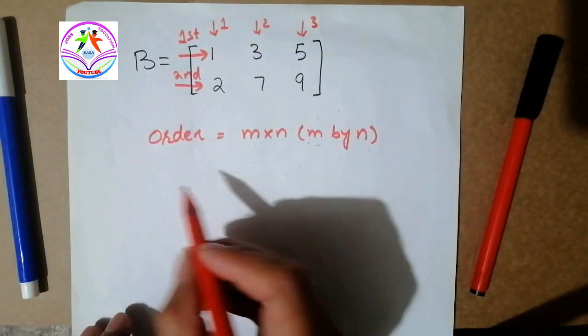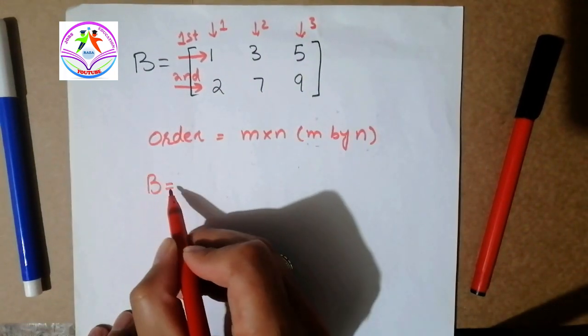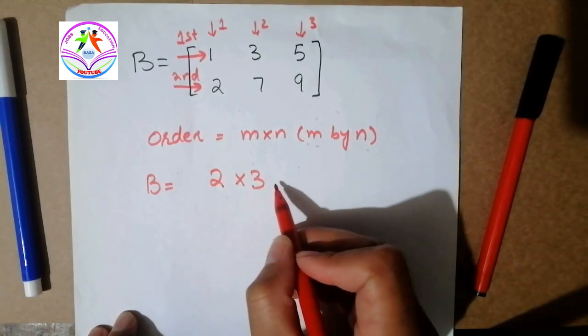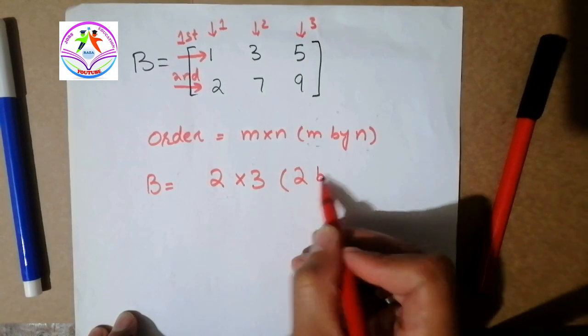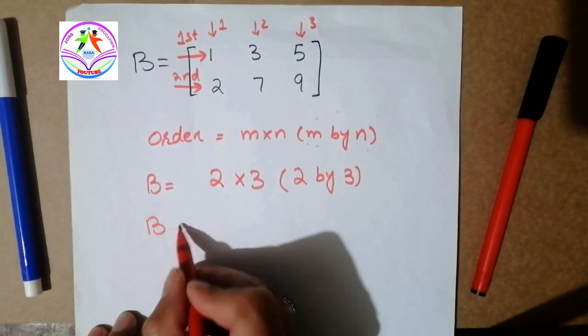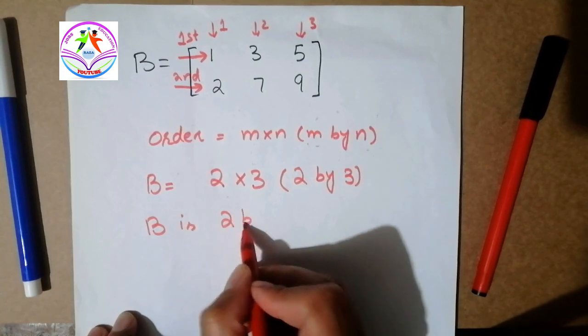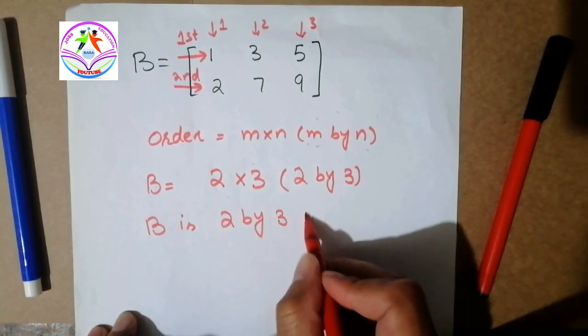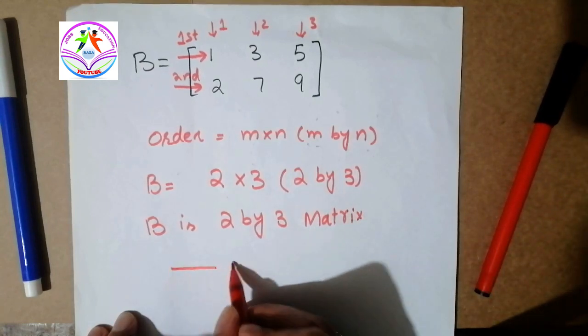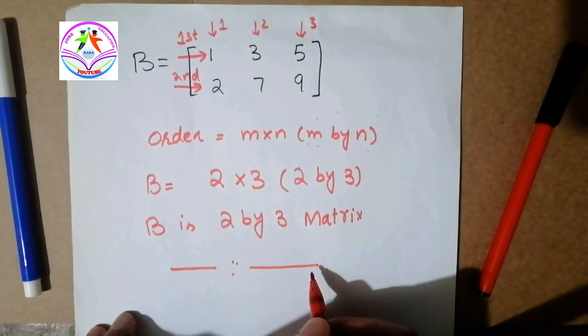So here you can check that first row and second row, first column, second column, and third column. So you can tell me what's the answer, two rows and three columns. Yes, you are right, 2 by 3. So we can say that B is 2 by 3 matrix. That's a simple and effective answer.